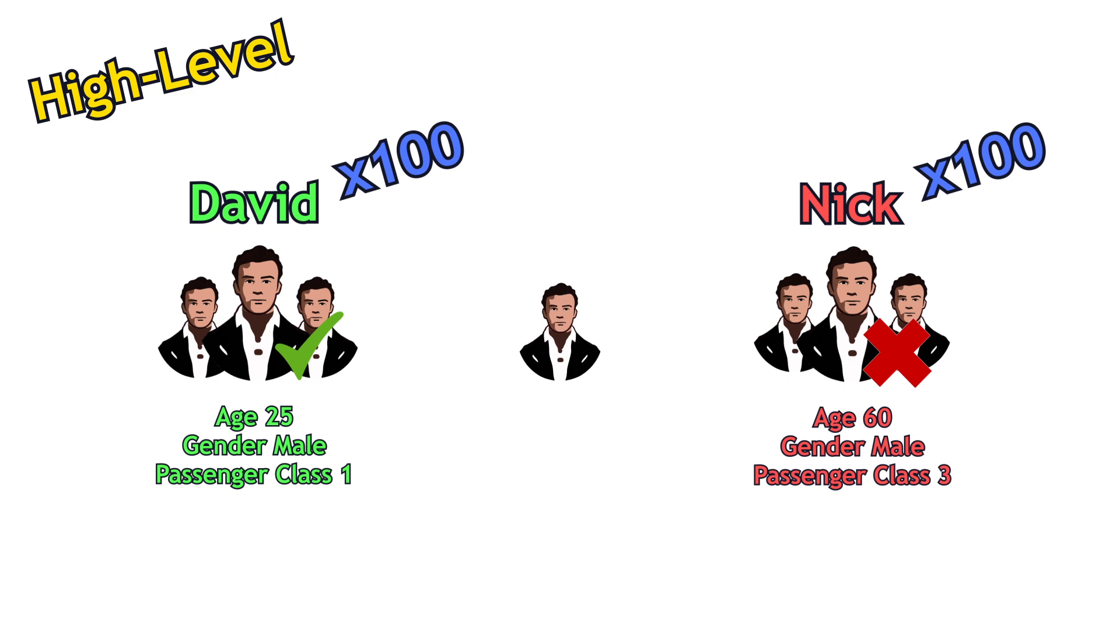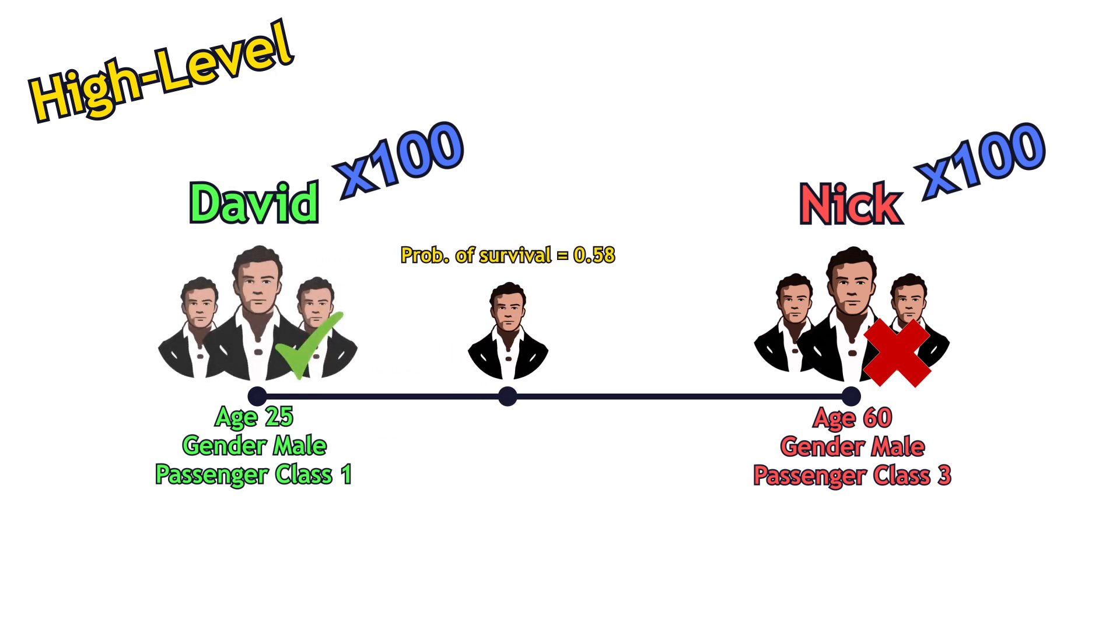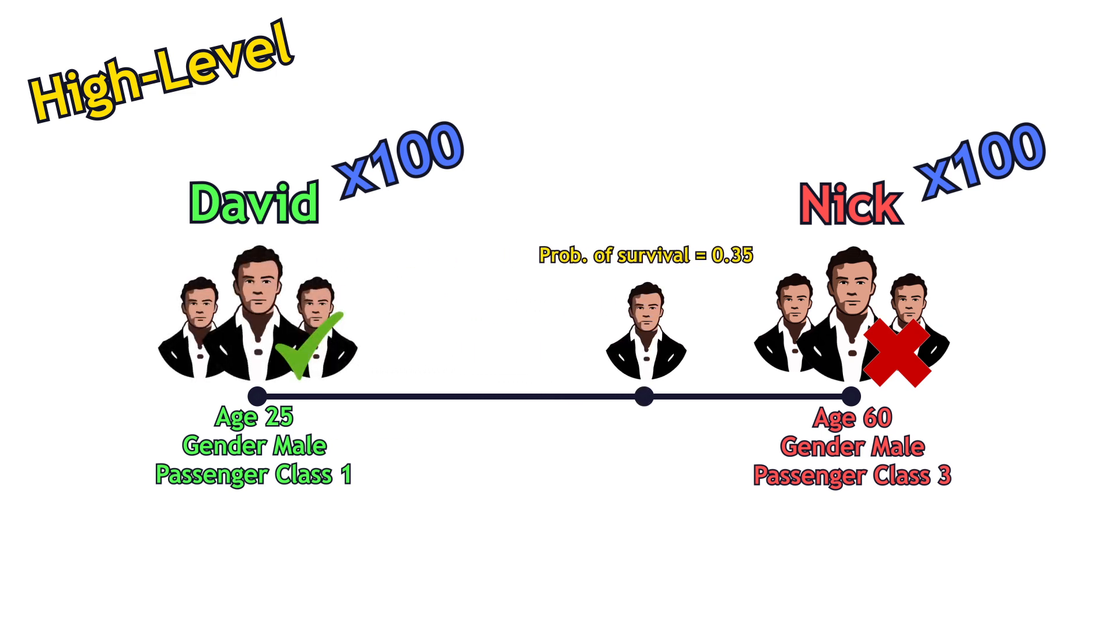A new passenger comes to the board. If his characteristics are similar to David's group, then we can say that he will probably survive. As long as the characteristics become more similar to Nick's group, the probability that the new passenger would survive becomes less.